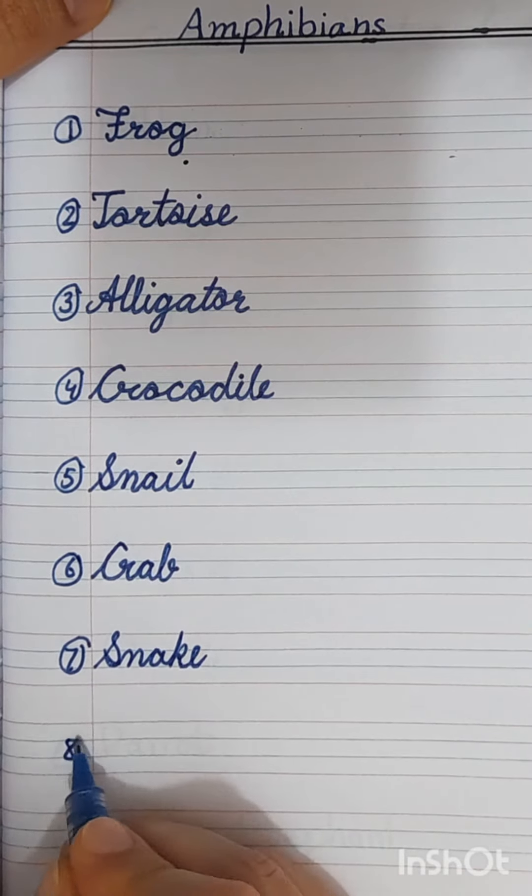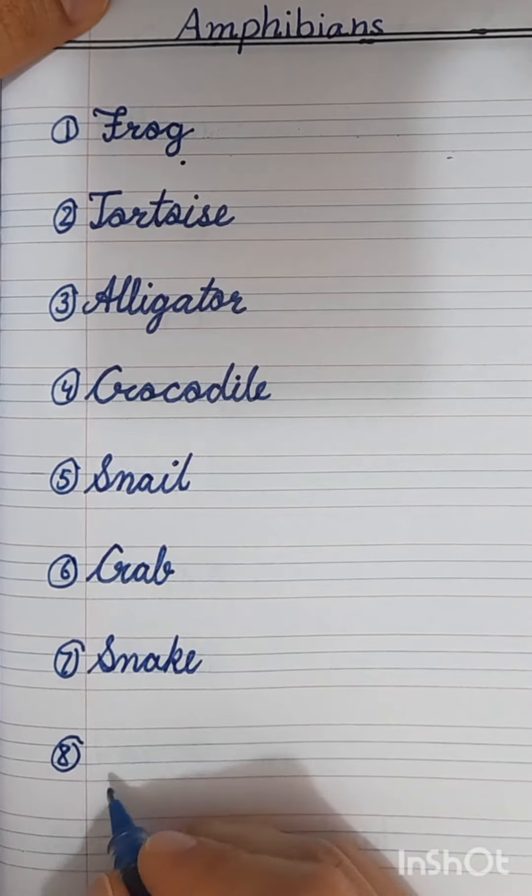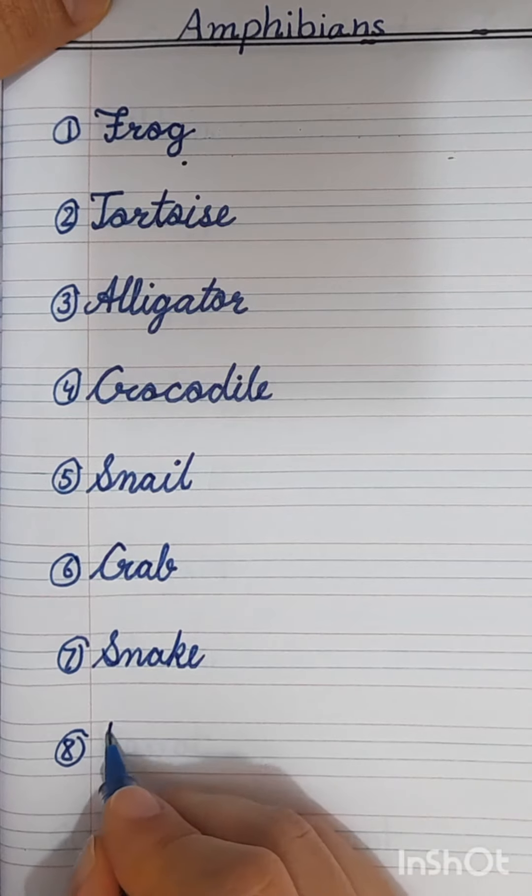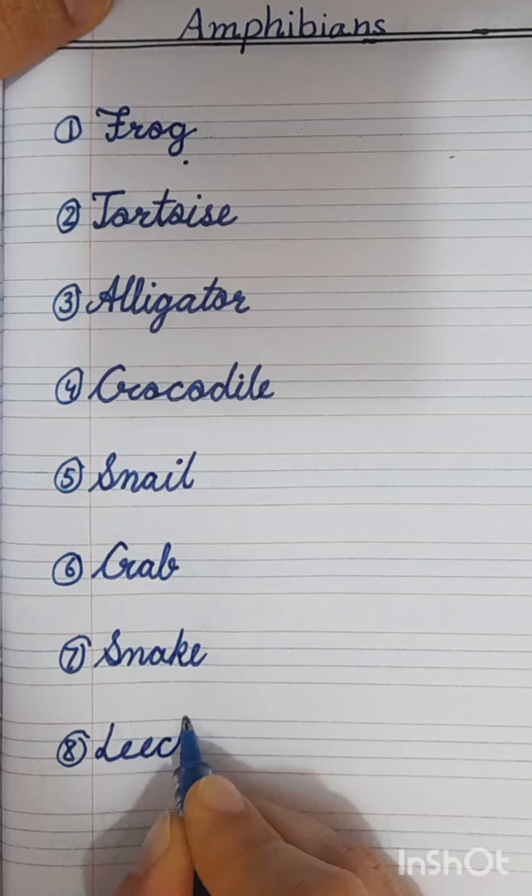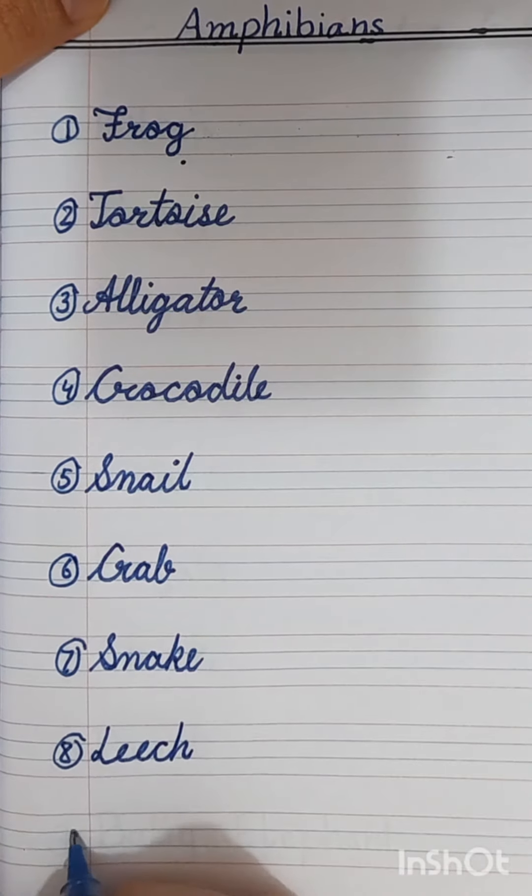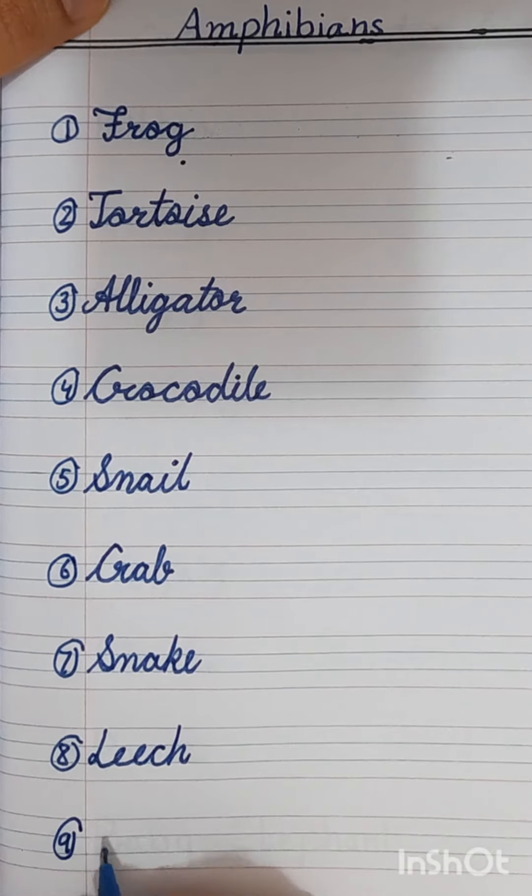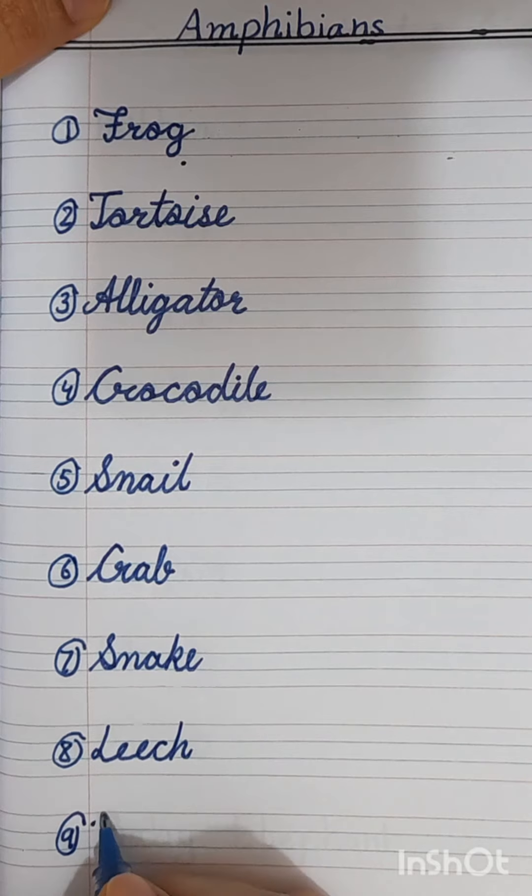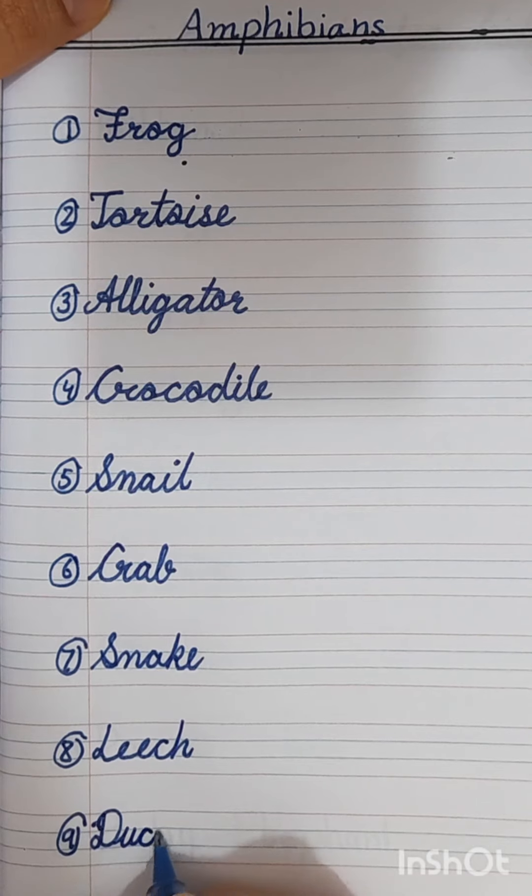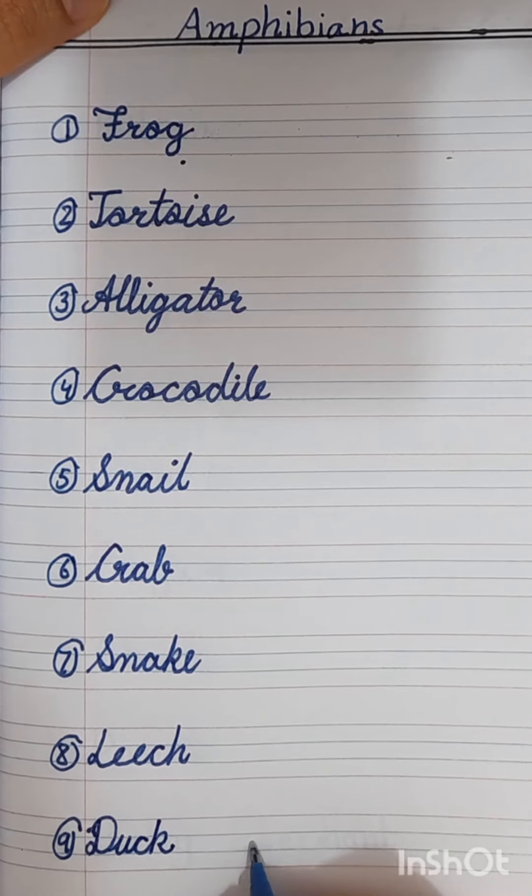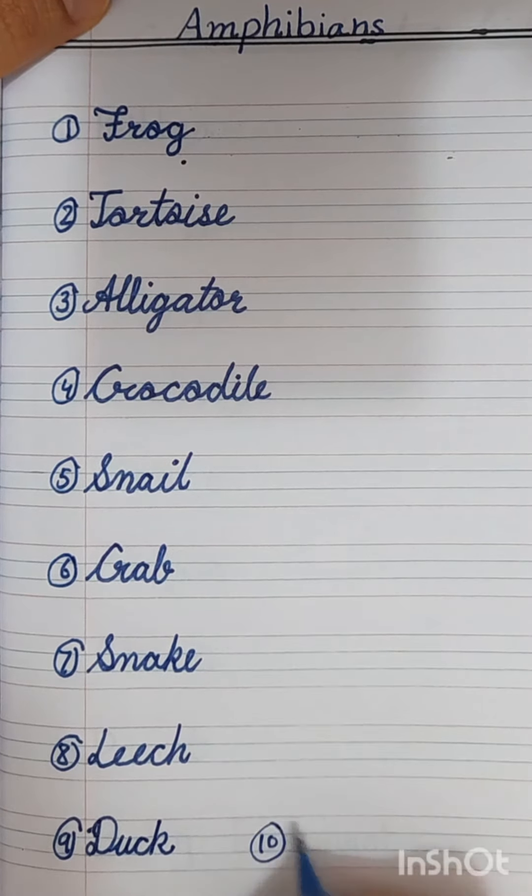Snake. Number eight: leech, L-E-E-C-H. Number nine: duck, D-U-C-K, duck. Number ten: toad.